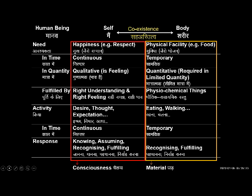For that, I need to understand everything in this existence. I need to understand myself, I need to understand the body, and the body is one material unit. Similarly, I need to understand all the units in the existence — the nature, everything. And that is possible; it is doable just by looking within. The process is just this: we can look within, see what our feeling is, see if it is naturally acceptable or not, and then see what feeling would be naturally acceptable to me at that time if I am not having a naturally acceptable feeling.